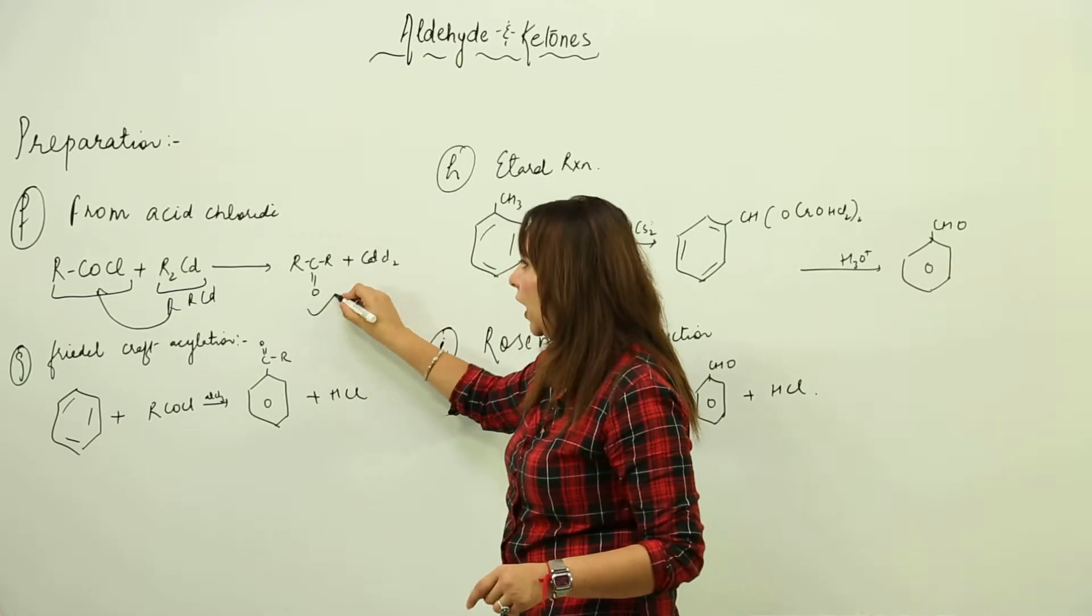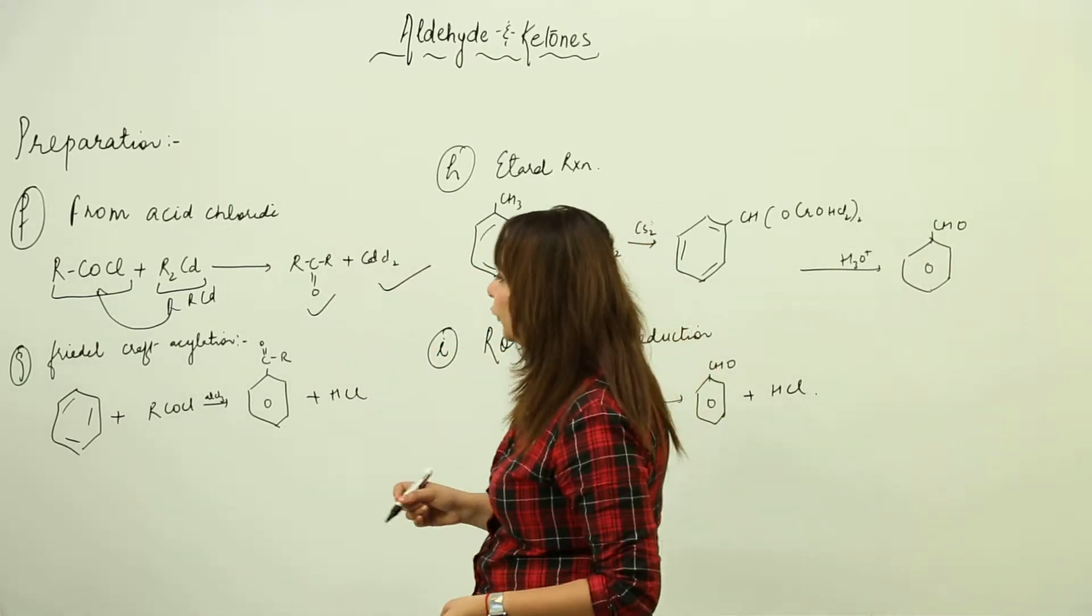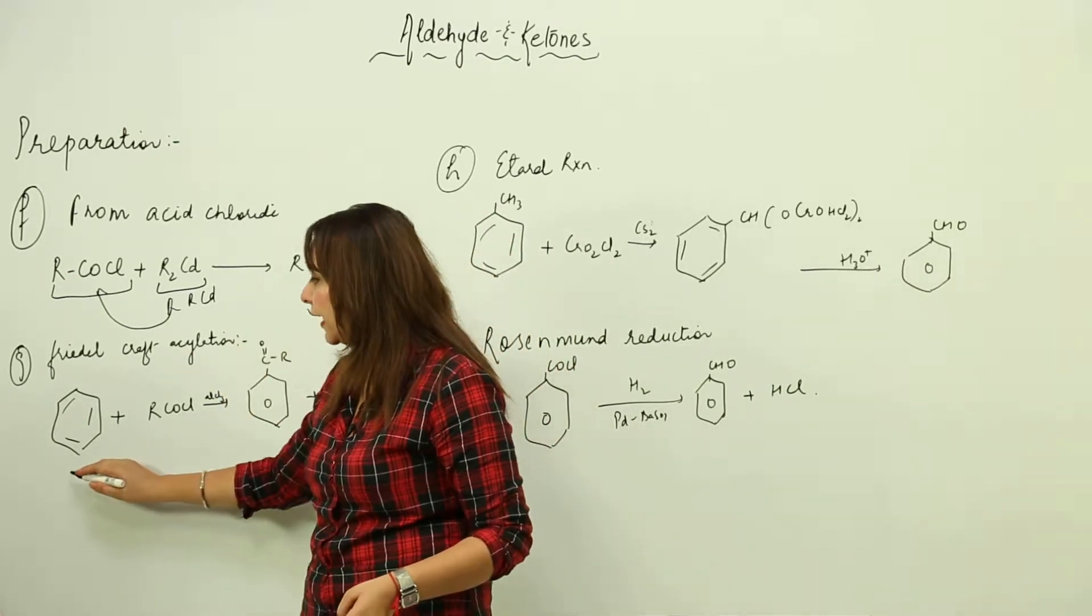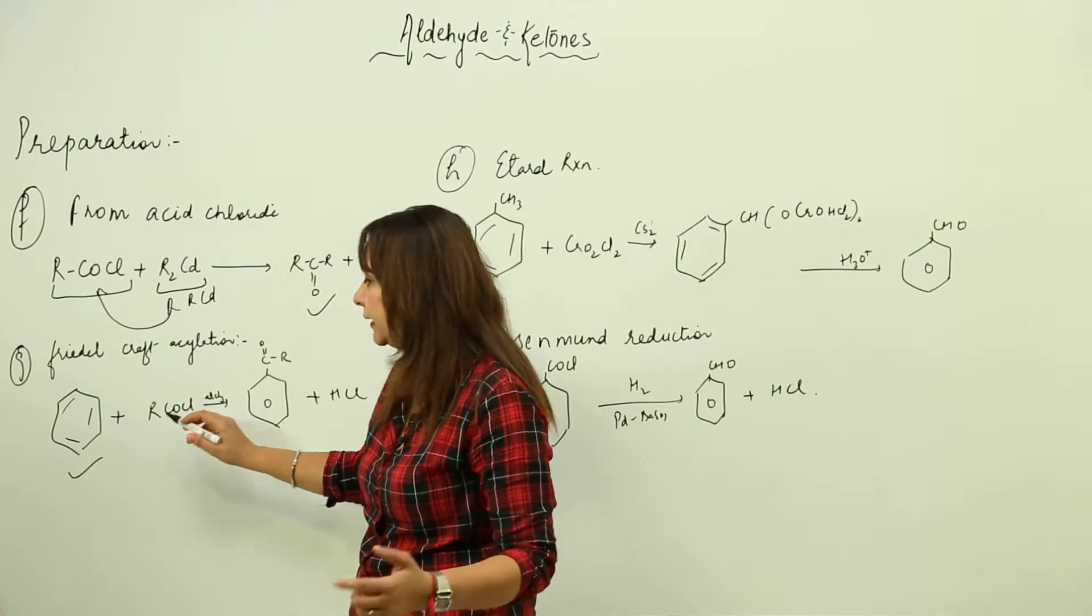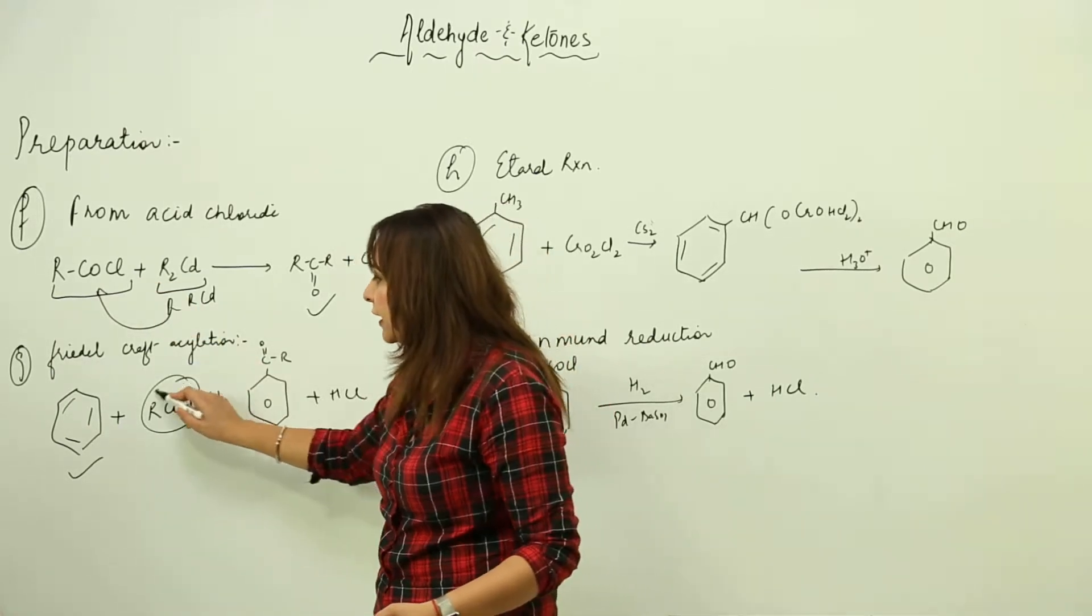Next is Friedel-Crafts acylation. Here we're going to react an aromatic ring, benzene, with RCOCl in presence of aluminum chloride. This group gets attached here and it becomes a mixed ketone.